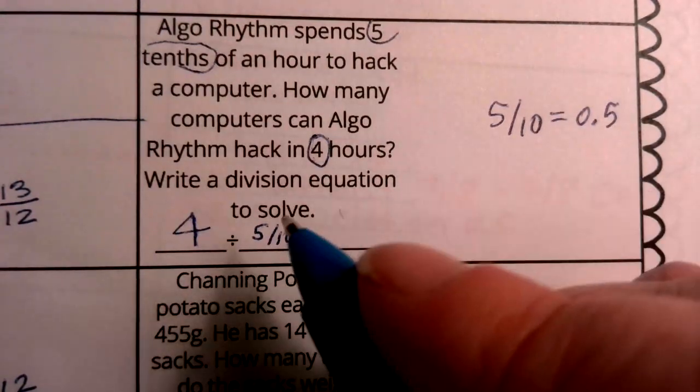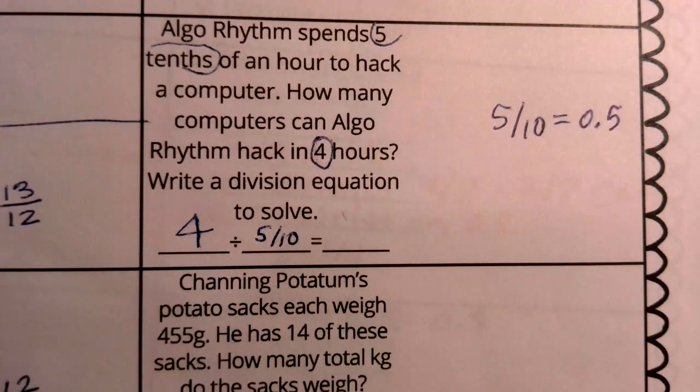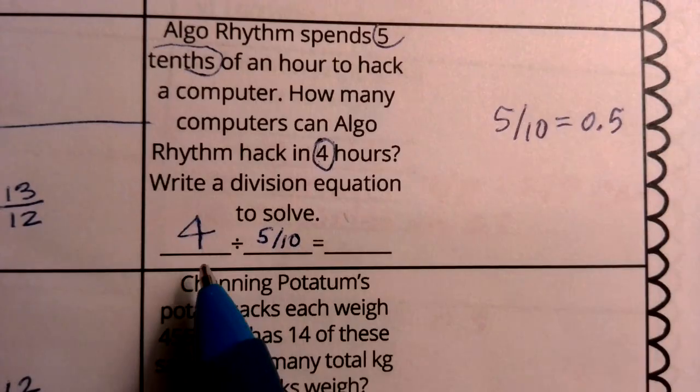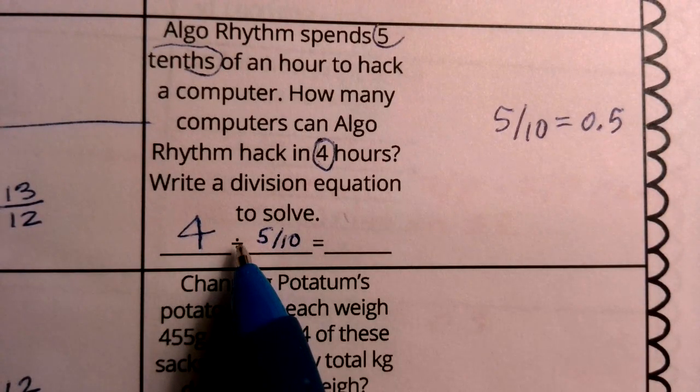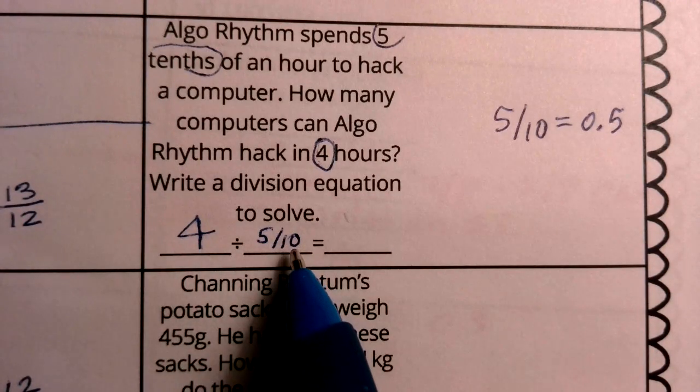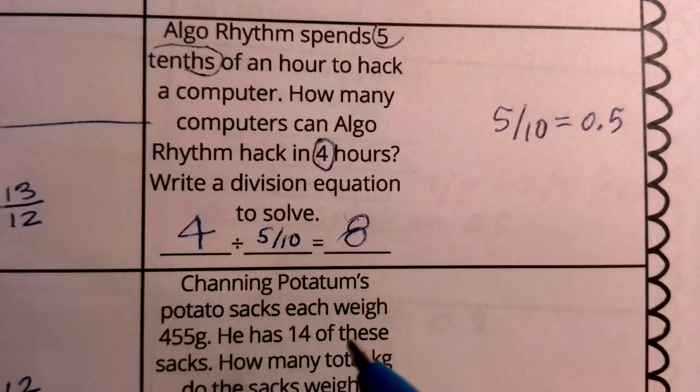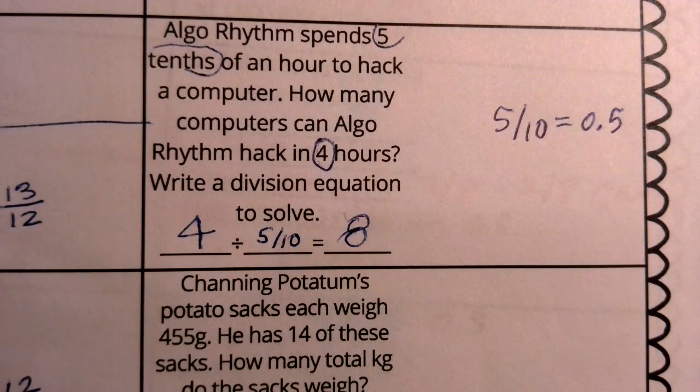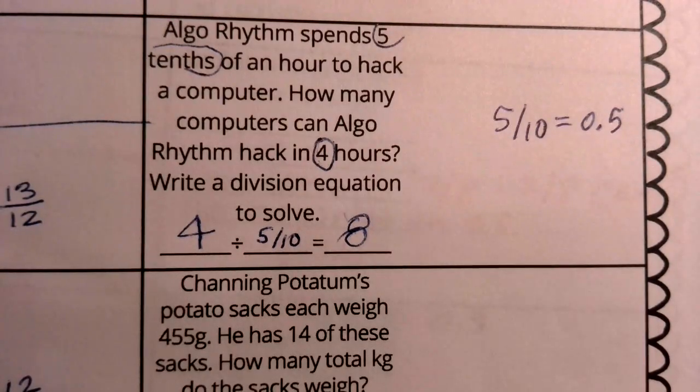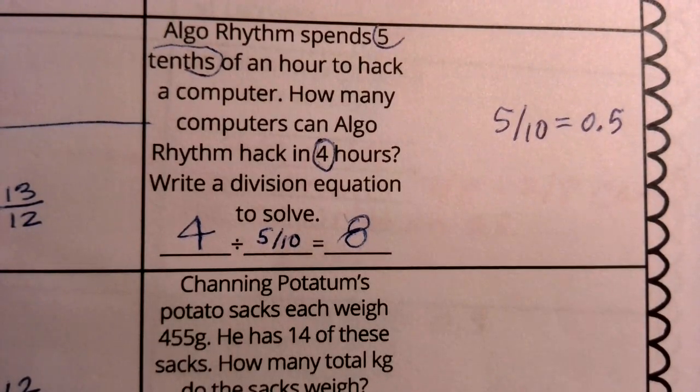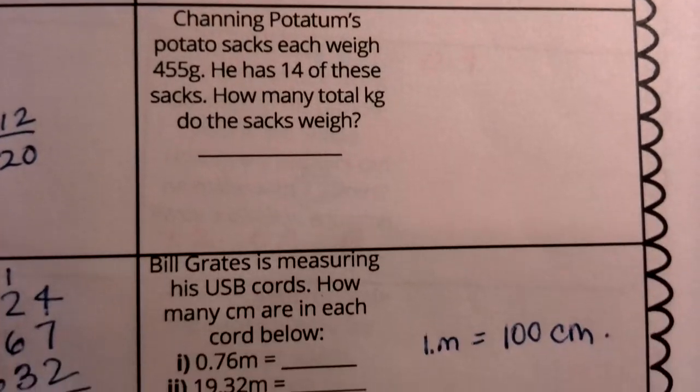Now remember, 5/10 is the same thing as 1/2. So if you did it as that, you can certainly substitute that. That means the same thing. But when I do that, when I take 4 and I divide it into halves, because 5 over 10 means halves, how many halves do I end up with? Well, I end up with 8. That's the answer to that problem. We created a division equation, plus we have also given the answer. The answer, of course, is the number of half hours that he has to hack into the computer.